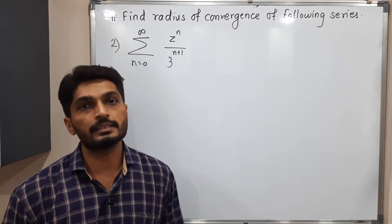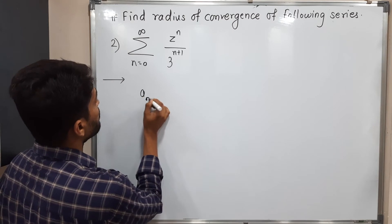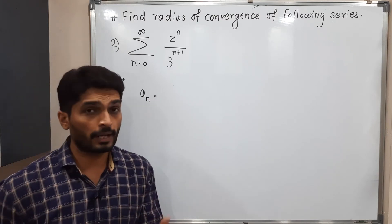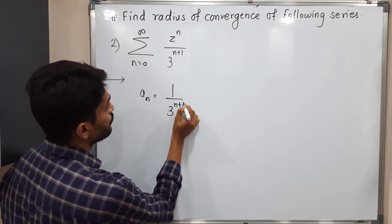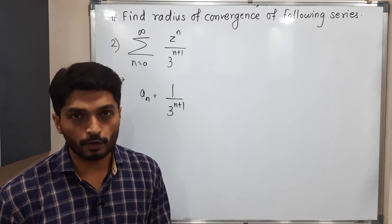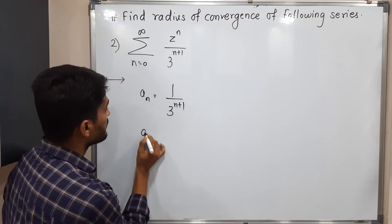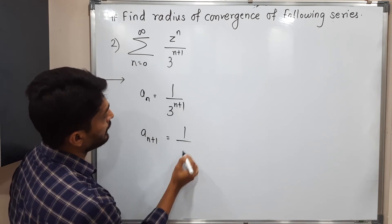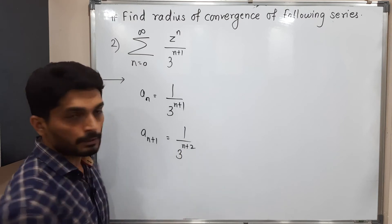Let us discuss the second example. Let us write a_n first — the coefficient of the term (z minus z_0) raised to n. Here the coefficient is 1 upon 3 raised to n plus 1. We are going to use the ratio test to find its radius of convergence. For that we also need a_{n+1}, which means replacing n by n plus 1, giving 1 upon 3 raised to n plus 2.